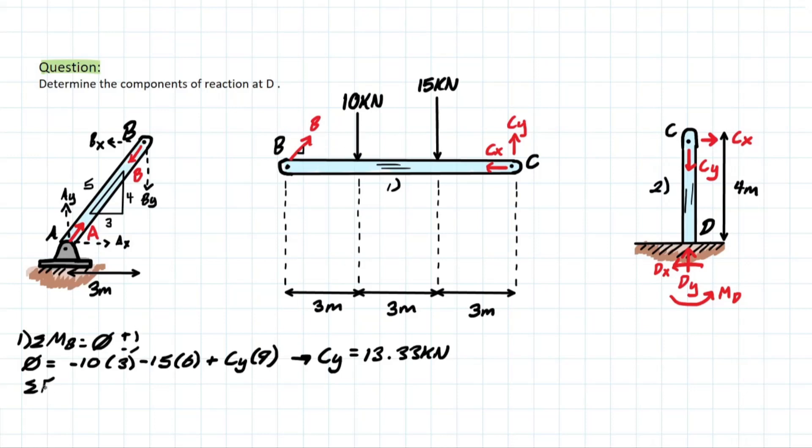So if we take the summational forces of Y, you guys will see what I mean pretty soon, we take 0 and we have B in the positive going upwards direction and B-Y is going to be that component from this special triangle here, which is going to be 4 over 5 for that Y component. And then following that, we have the applied forces of negative 10 and negative 15 plus the C-Y that we solved for earlier, which is 13.33 kilonewtons. And then we can take that final formula and solve for B, which is going to give us a number 14.59 kilonewtons.